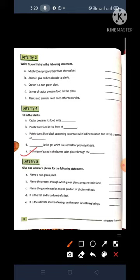Now come to the E part. Exchange of gases in the leaves Take place through the? Take place through the Stomata. What you will write in the blank? Stomata S-T-O-M-A-T-A Stomata.